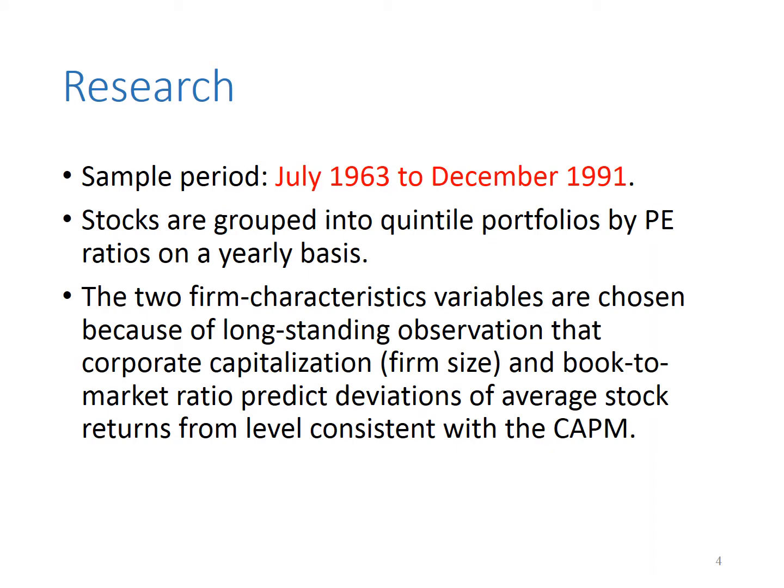How is the research conducted? Fama and French examine the behavior of a broad sample of stocks grouped into quintile portfolios by their price-to-earnings ratios on a yearly basis, over the period from July 1963 to December 1991. The two firm characteristics are chosen because of the long-standing observation that corporate capitalization and book-to-market ratio seem to be able to predict the duration of average stock returns.